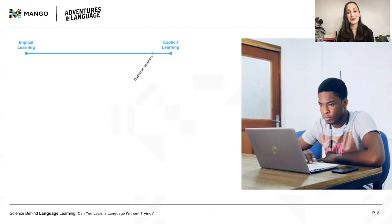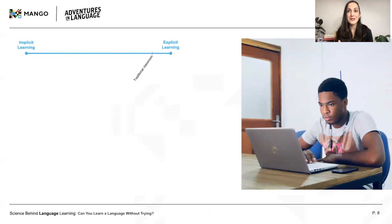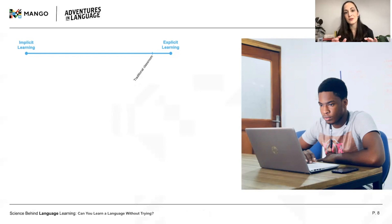Now let's consider a classroom learner, Parker. Before class, Parker has to read a chapter in his textbook and finish a few fill-in-the-blank exercises. He also has to study for that vocab quiz on Friday. In class, Parker's teacher gives a brief grammar explanation before asking the students to pair up and work in groups. She tries to guide students toward finding and correcting their own mistakes, but she'll also provide explicit feedback, drawing learners' attention to language forms. Parker takes notes and is focused on grammatical form.